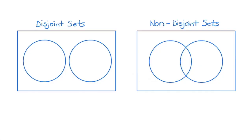Remember that each element within a universal set can only appear once within a Venn diagram. If we have disjoint sets, that means no element within this subset is also going to appear within this subset — they are disjoint.